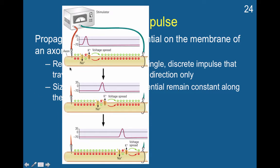This is basically how an action potential would propagate down an axon. An action potential begins with stimulation, and the inside of the cell is going to reach a point of negative 50 millivolts — that's going to cause the sodium channels to open. When these sodium channels open, the cell becomes more positive, and then a nearby sodium channel further down is going to activate.